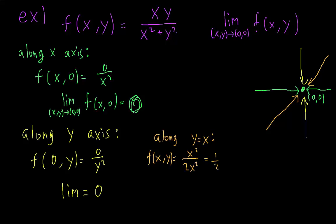If the function is always equal to 1/2, then obviously the limit as x, y approaches anything is going to be 1/2. So the limit as x, y approaches (0, 0) of the function, if we approach along the line y equals x, is equal to 1/2, not 0. Since we have found a path which has a limit different than another path, we know that the limit does not exist, because the limit must be the same across all possible paths.